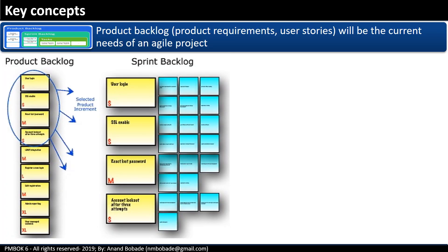In an agile lifecycle, product scope is documented in the form of a product backlog — a list of high-level requirements or characteristics of a product. The top-ranked items from the product backlog are selected for a sprint and added to the sprint backlog. During the sprint planning session, these requirements are further elaborated in the form of user stories. We'll talk about product backlog and sprint backlog in more detail in another session.